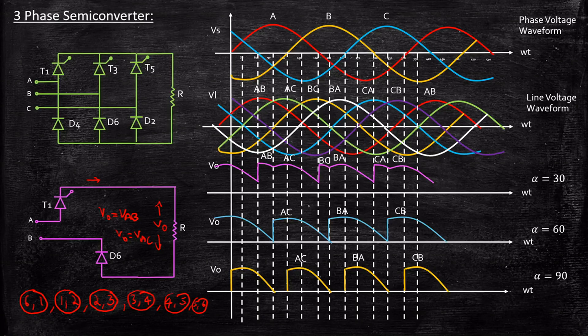An important point: when alpha is equal to or greater than 60 degrees, you get a discontinuous output voltage waveform, meaning the output voltage goes to zero for some intervals. This is the waveform for a resistive load. For an inductive load the output voltage waveform remains the same, but the current can be continuous or discontinuous depending on the inductor value chosen. I hope this video gave you a clear understanding of how to analyze a three-phase semi-converter. Feel free to type your questions in the comment section below — thanks for watching, stay tuned.